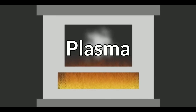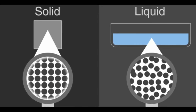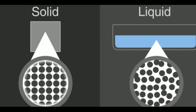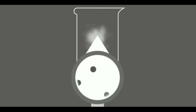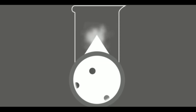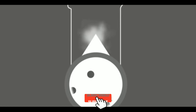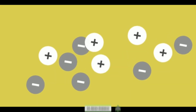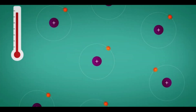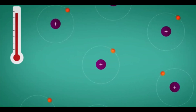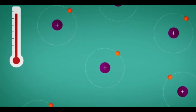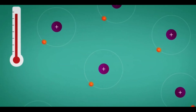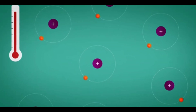If you look at the molecules in a solid, they are very tightly packed. In a liquid they are a little loose, and in a gas they are even more loose. But plasma is totally different. In an atom there are electrons, protons, and neutrons. In plasma, the gas is heated so intensely that atoms lose their electrons, becoming ionized.